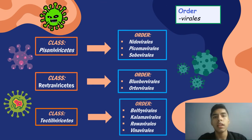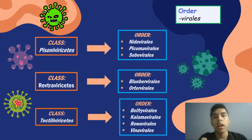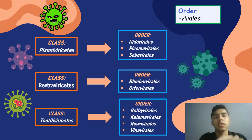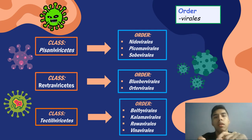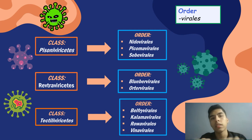For the class Bisonivirales, we have three orders: Nidovirales, Sobevirales, and Picomavirales. For the class Reptravirales, we have two orders: Blubervirales and Orchervirales. And for the class Tectivirirales, we have four orders: Belfrivirales, Calamavirales, Pinavirales, and Roavirales.